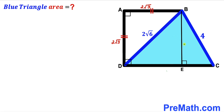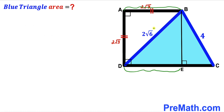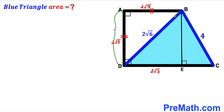Next, we drop perpendicular BE onto side CD. Observing the figure, this angle is 90°, this angle is 90°, and this angle is 90° as well. We can see that AB equals DE — if AB is 2√3, then DE is 2√3 as well. Likewise, AD equals BE — if AD is 2√3 then BE is 2√3 as well.